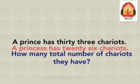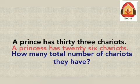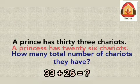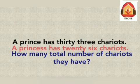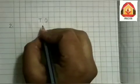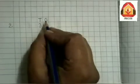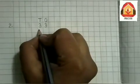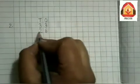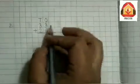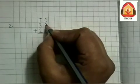Let us find out the total number of chariots they have. We have to find out the total of 33 and 26, so let us solve this in vertical way. First we will write 10's and 1's above the numbers. Then we will write the first number: a prince has 33 chariots, so we write 33 — three 10's and three 1's. After that, a princess has 26 chariots — two 10's and six 1's. Then we will put the addition symbol and a line. Then we will add the numbers on 1's place: 3 plus 6.